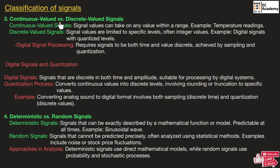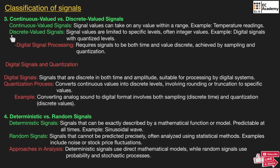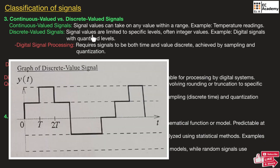In a continuous valued signal, the signal values can take any value within the range. For example, temperature readings are a continuous valued signal. In a discrete valued signal, the signal values are limited to specific levels, often integer values. For example, digital signals with quantized levels are discrete valued signals.